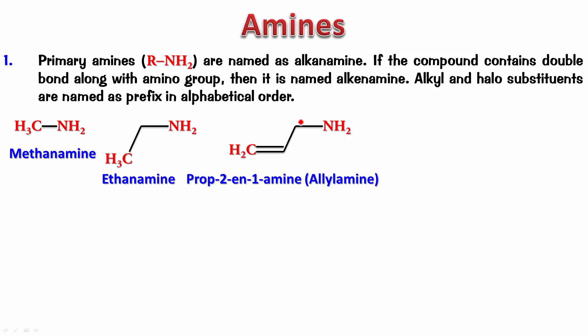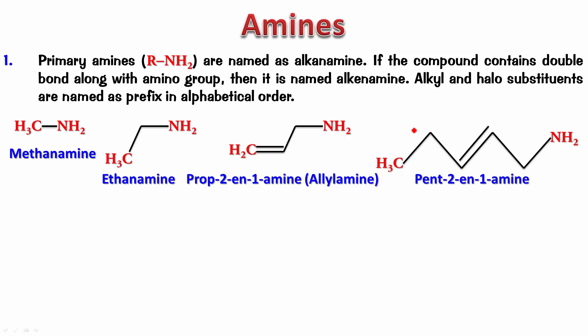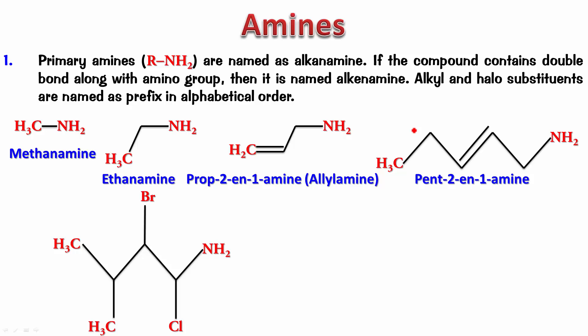Try this one. Numbering has to be done from here: one, two, three, four, five. It's pentan-2-amine. Try the next one. Numbering: one, two, three, four. The name is 2-bromo-1-chloro-3-methylbutan-1-amine.